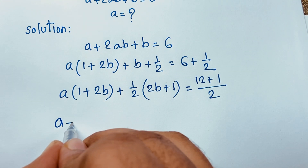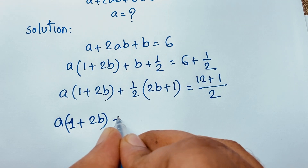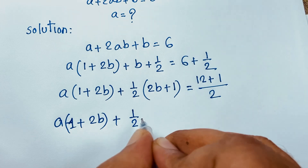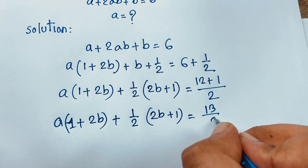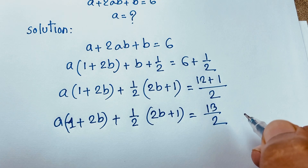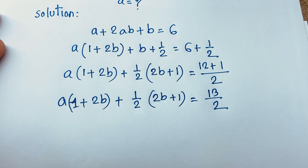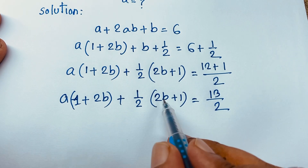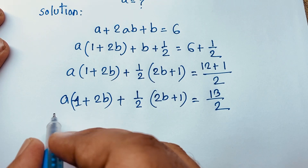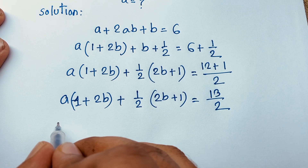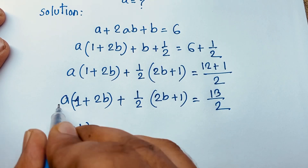So we have a(1 + 2b) + (1/2)(2b + 1) = 13/2. Now you can see that (1 + 2b) is common on the left side. This is (1 + 2b) and this is (1 + 2b), so if I take (1 + 2b) as common, the left side becomes (1 + 2b) times the sum of the two coefficients.